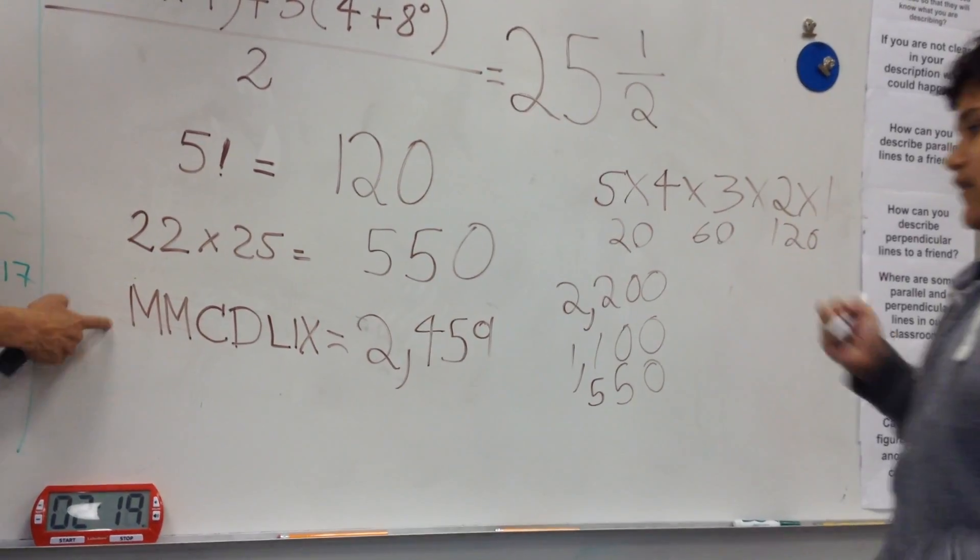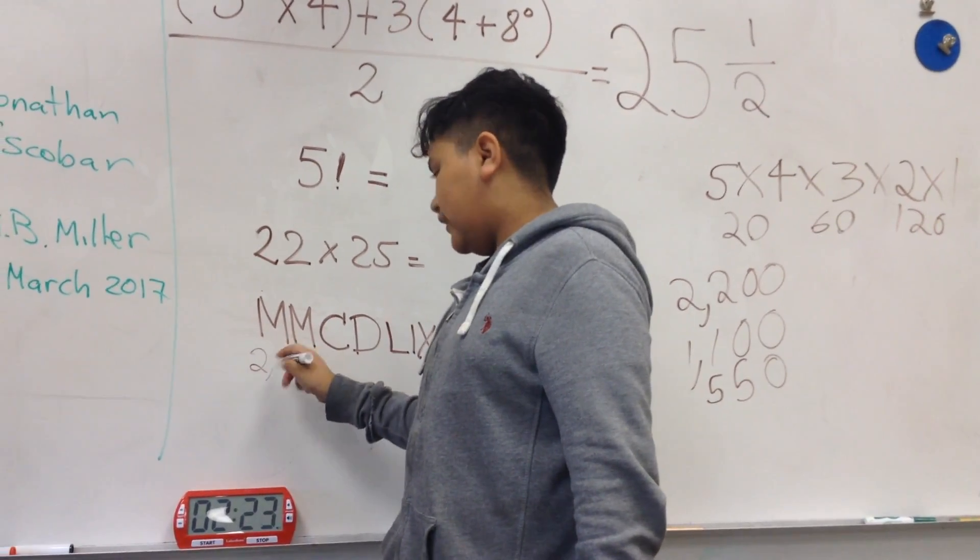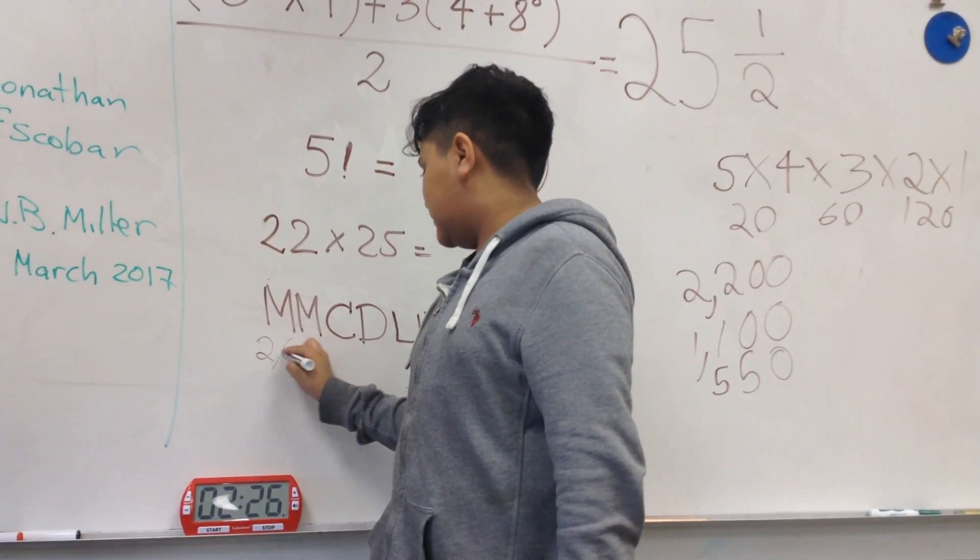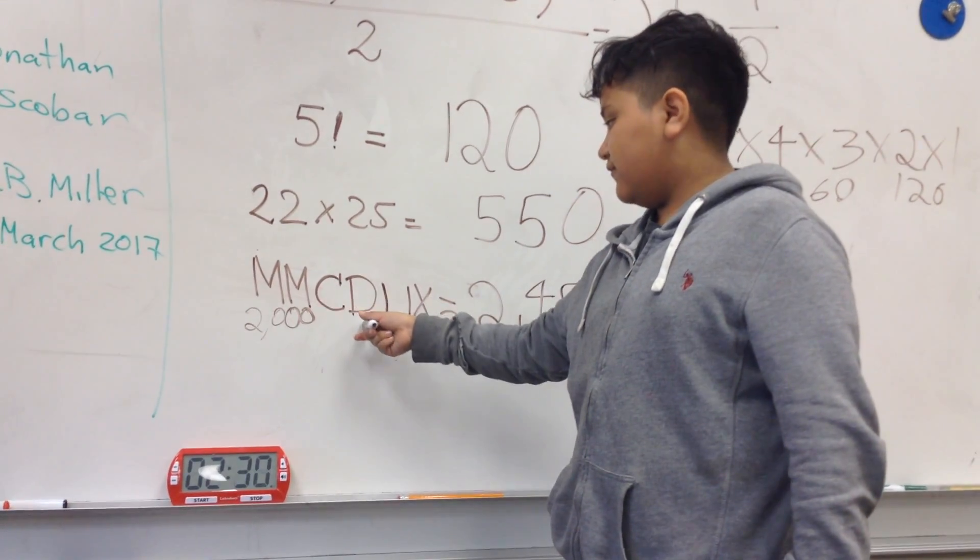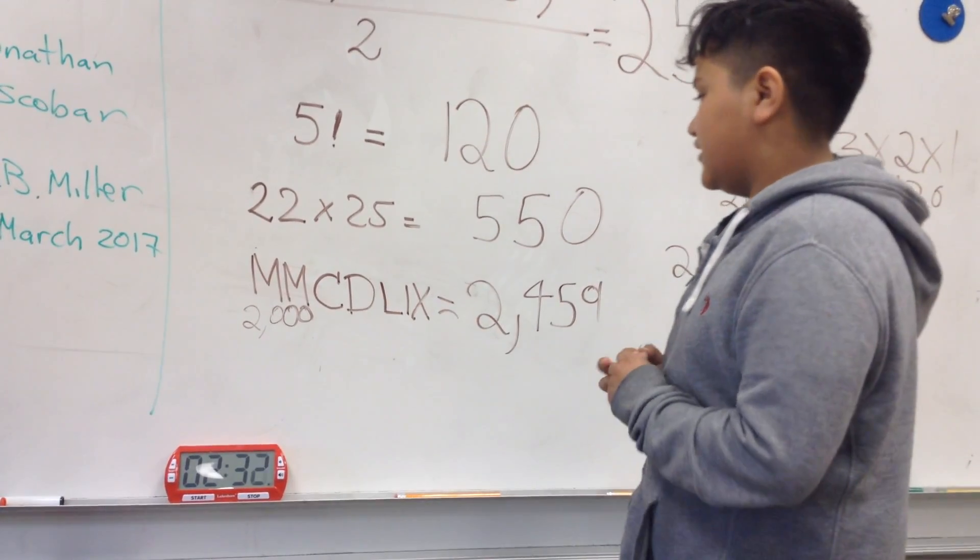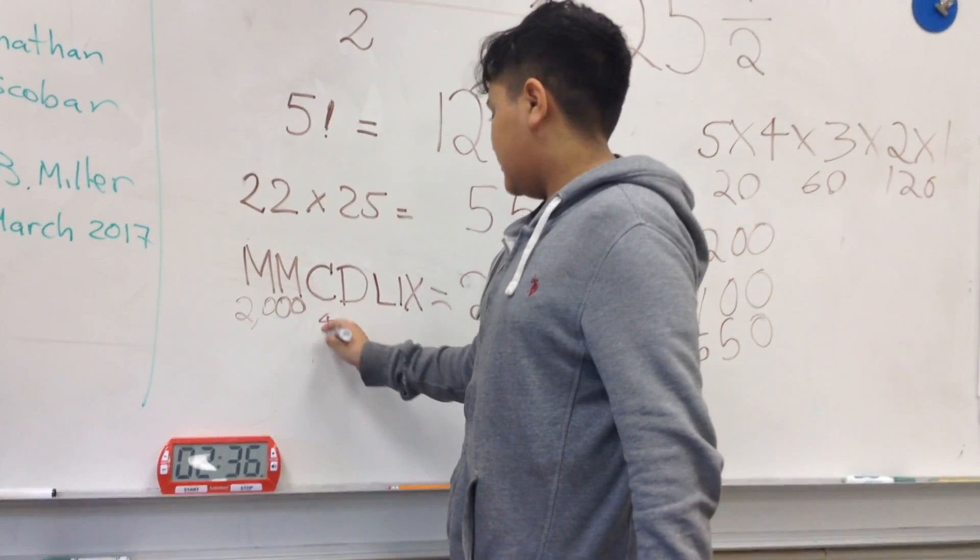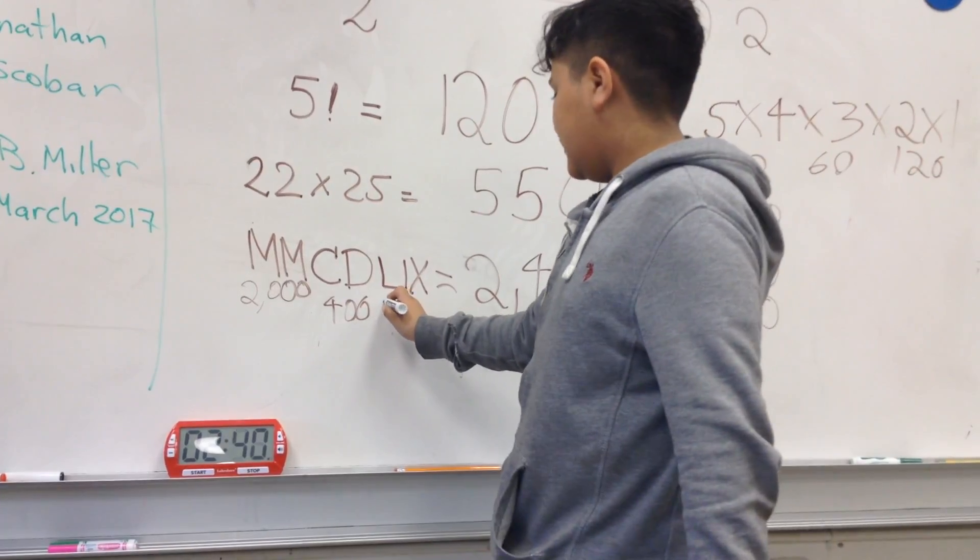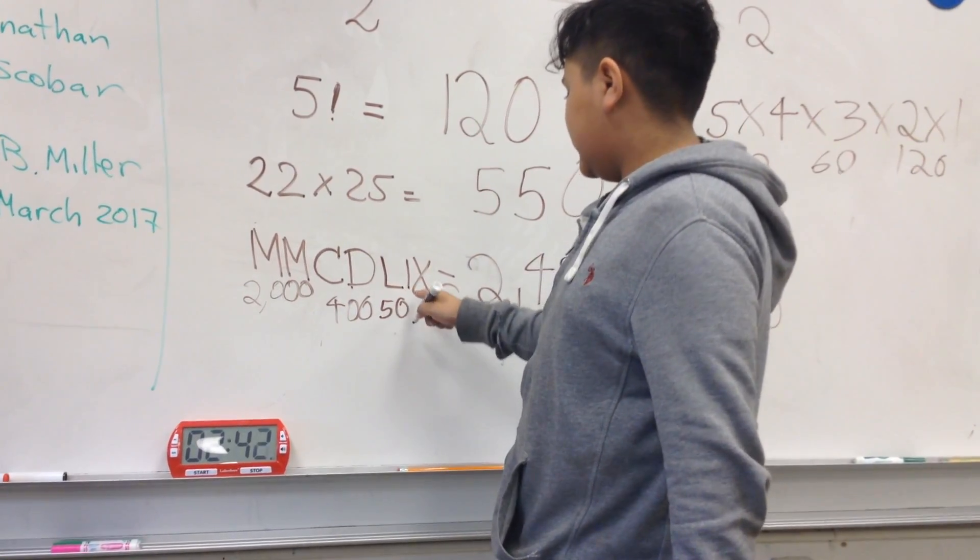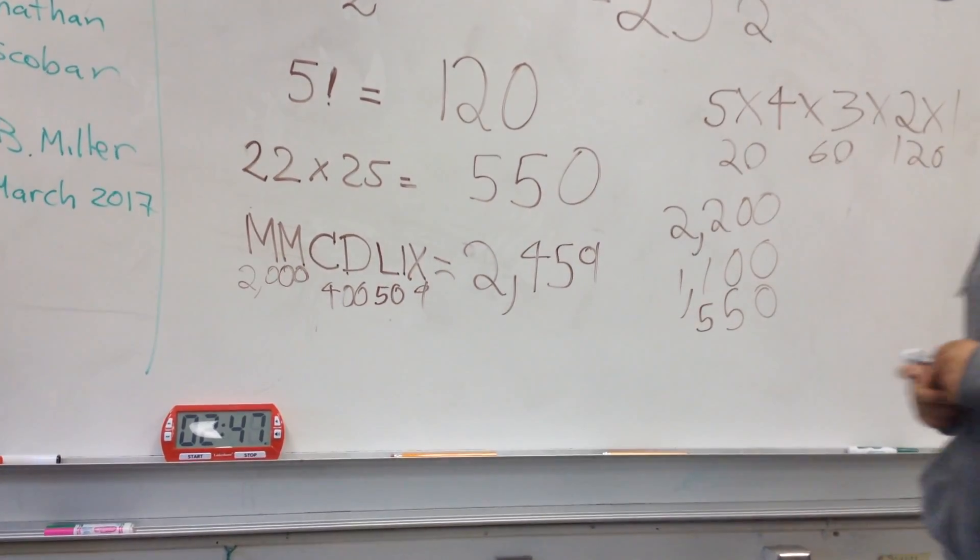Okay, what about this? What is this? Every M is two thousand. Every M is one thousand. So two M is two thousand. C is one hundred. D is five hundred. That's one hundred before five hundred. That's four hundred. L is fifty. And this is one before ten. That's nine. Add them together, two thousand four hundred fifty-nine.